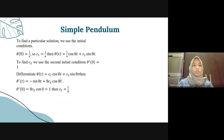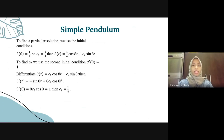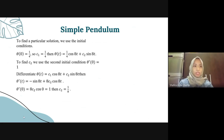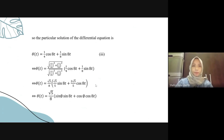To find the particular solution, we apply the initial condition theta(0) equals 1/4, giving c1 equals 1/4. So theta(t) equals (1/4) cos(8t) plus c2 sin(8t). To find c2, we use the second initial condition theta'(0) equals 1. Differentiating theta(t), we get theta'(t) equals -8c1 sin(8t) plus 8c2 cos(8t). Applying theta'(0) equals 1 gives 8c2 equals 1, so c2 equals 1/8. The particular solution is theta(t) equals (1/4) cos(8t) plus (1/8) sin(8t).